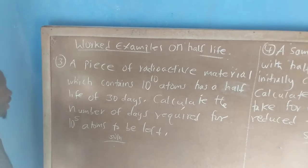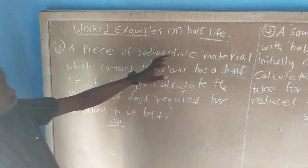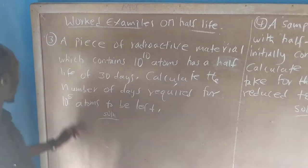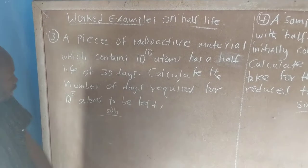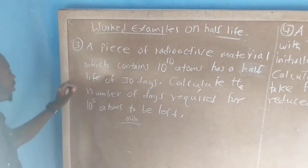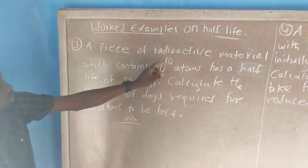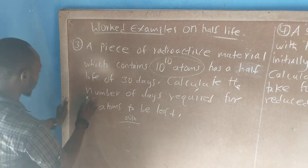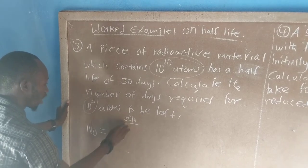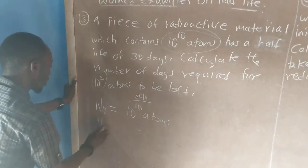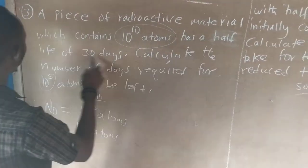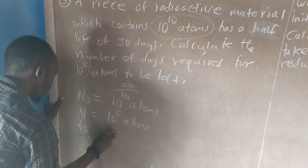Example three: a piece of radioactive material which contains 10 to the power 10 atoms has a half life of 30 days. Calculate the number of days required for 10 to the power 5 atoms to be left. So we are given N₀ equals 10 to the power 10 atoms (initial), N equals 10 to the power 5 atoms (final), and T½ equals 30 days. We are required to calculate the time t.